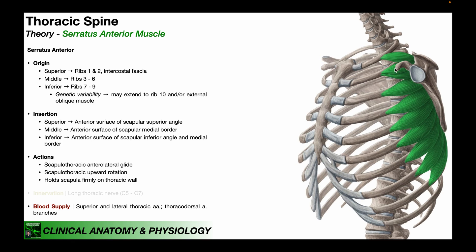Over here on the right, you see the serratus anterior muscle in green, and you can see it's composed of multiple heads that appear to go down the ribs. This muscle gets its name 'serratus' because collectively each head of the serratus anterior looks like the edges of a serrated steak knife.